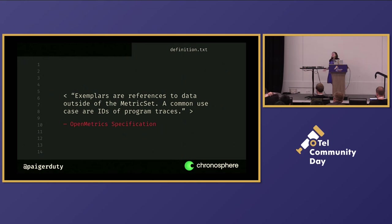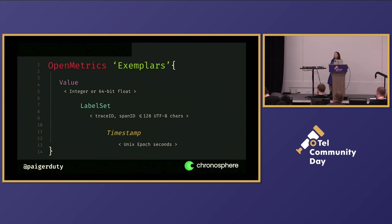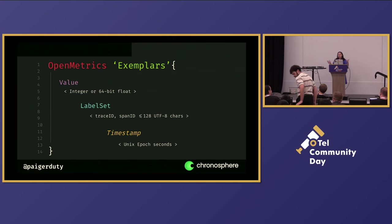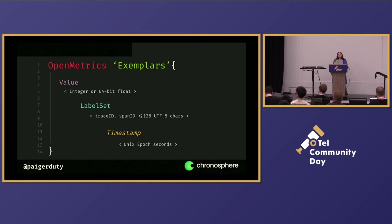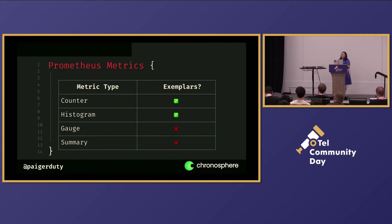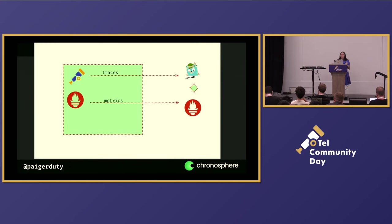The OpenMetrics spec defines exemplars slightly differently: as a reference to data outside of the metric set, common use case being program trace IDs. OpenMetrics is intended as a neutral metric spec not tied to Prometheus, but Prometheus intends to implement it. When we unpeel the layer: we've got a value, a label set — filtered attributes — and the timestamp this time in Unix epoch seconds. So while exemplars kind of sound the same on the surface — trace information attached to a metric — they're not necessarily a one-to-one match once you dig into the details. For Prometheus, only counters and histograms support exemplars, not gauges, not summaries.